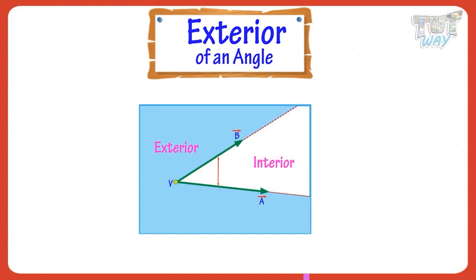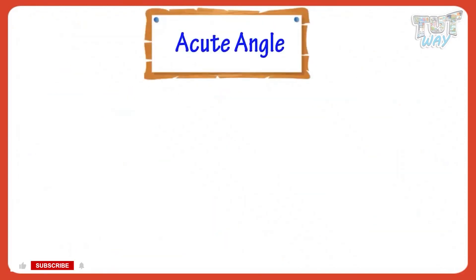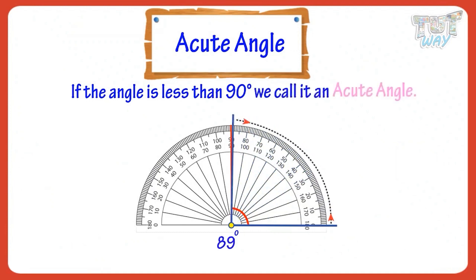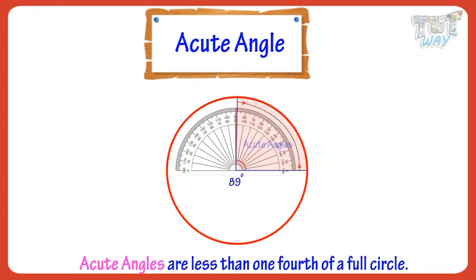Now let's learn the types of angles. If the angle is less than 90 degrees, we call it an acute angle. So acute angles are less than one-fourth of a full circle.